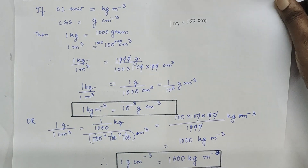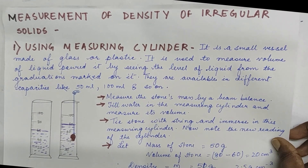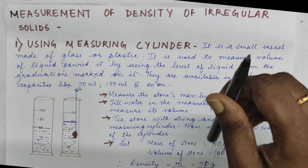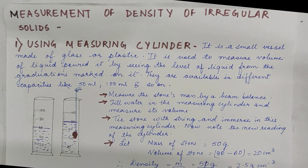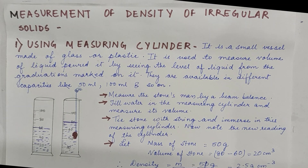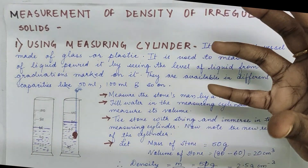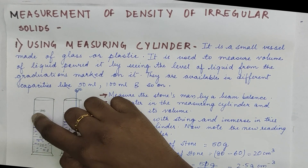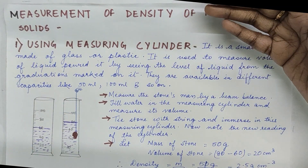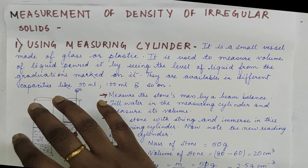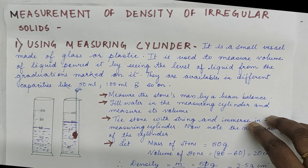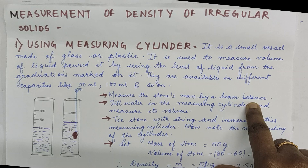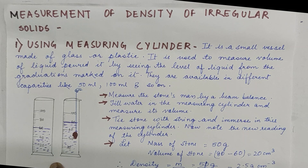Now, how do we measure density? Density can be measured using different cans and cylinders. For an irregular solid like a stone, we cannot use direct formulas. We use a measuring cylinder, which has graduations marked on it and comes in sizes like 50, 100, 250, 500 ml. It is made of plastic or glass and is used to measure the volume of liquid. First, measure the stone's mass using a beam balance or physical balance, then fill the measuring cylinder with water to a known volume.